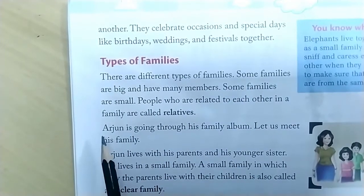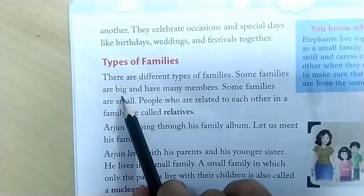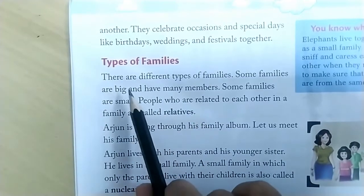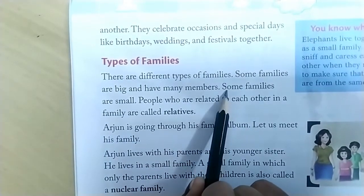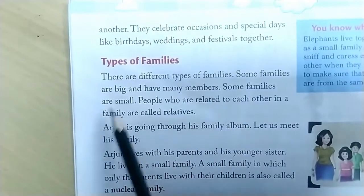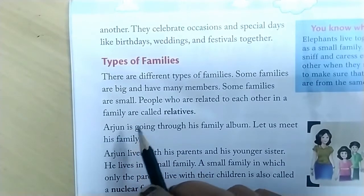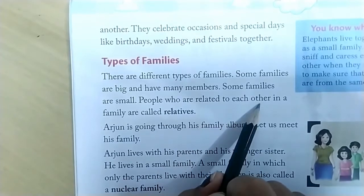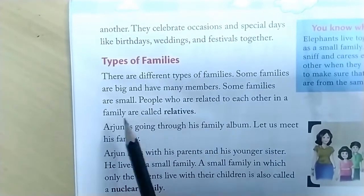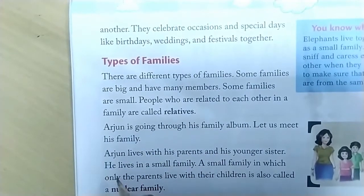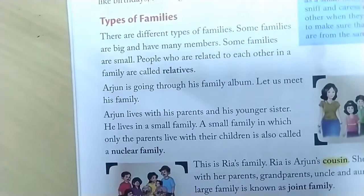Some families are big and have many members. Some families are small and have fewer members. People who are related to each other in a family are called relatives.